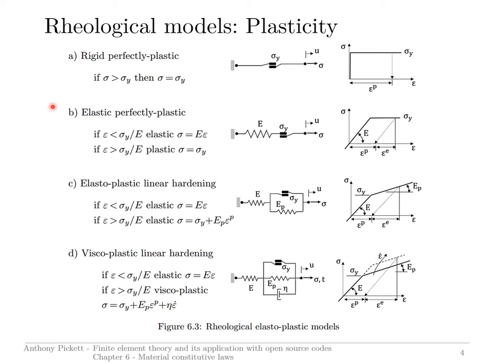The next one is elastic, perfectly plastic. As you move on to many metals, you will have a certain elasticity for the material behavior up until some yield point, at which case this element breaks and you would then have perfect sliding occurring. The spring shown there would no longer extend. If unloading occurred, you would come down here — this slope would be parallel to the initial loading slope — and you would have permanent plastic strain in the material, and this would be the elastic strain in the unloading.